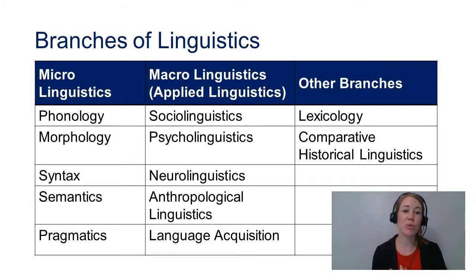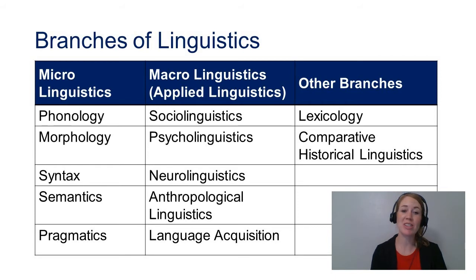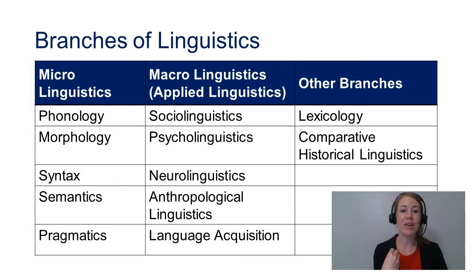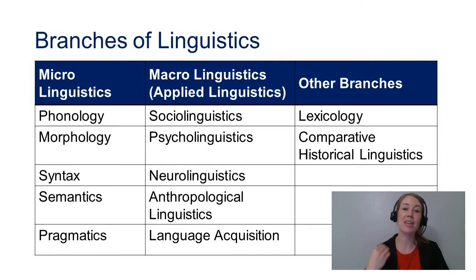Phonology deals with the sounds in a language. For example, we have 44 sounds in the English language. Morphology deals with the smallest units of meaning in a language. So for example, if I say the word dog, you probably think of a small fluffy pet-like creature. If I add an S to say dogs, you are now thinking of multiple small fluffy pet-like creatures. Morphology is interested in how a word can morph or form to take on new meaning, such as adding the S to dog.